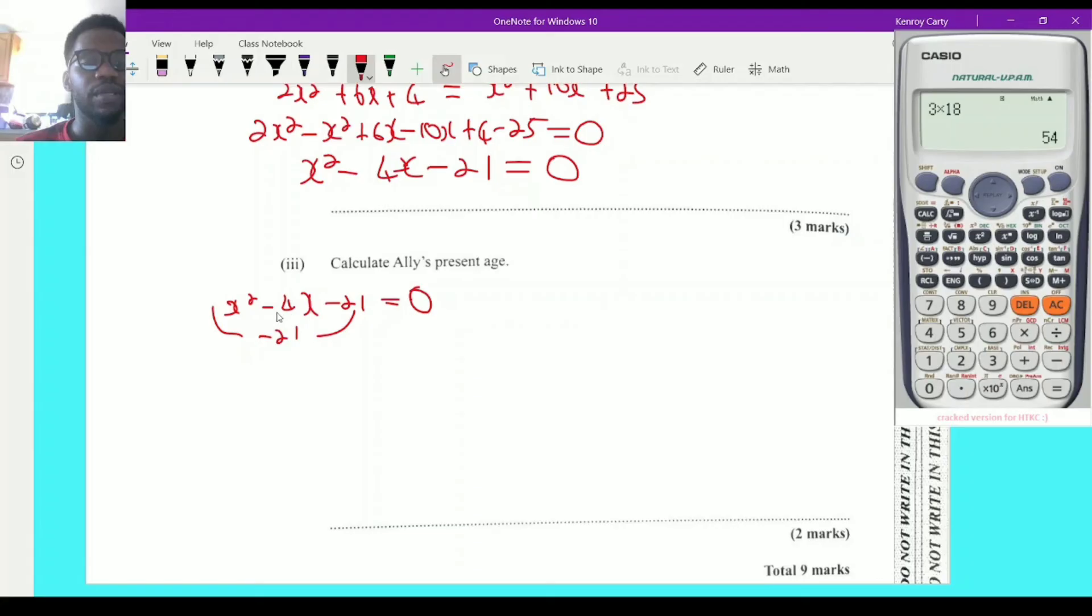So we have x squared minus 4x minus 21 is equal to 0 and we know the procedure. We go ac, now a is 1 even though we don't see any number there, so 1 times negative 21 is negative 21. Now we want two numbers when we multiply it we get negative 21, when we add it we get negative 4. So here I'm thinking we could use negative 7 and positive 3. So we have x squared plus 3x minus 7x minus 21 equal to 0 and then we're going to have to factorize. Now remember when factorizing 4 terms we use the pairing concept.